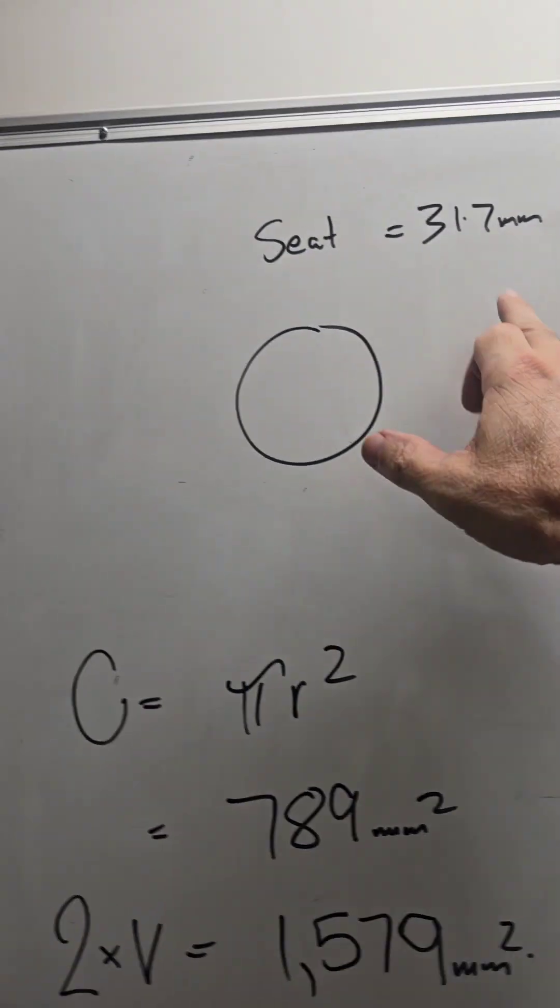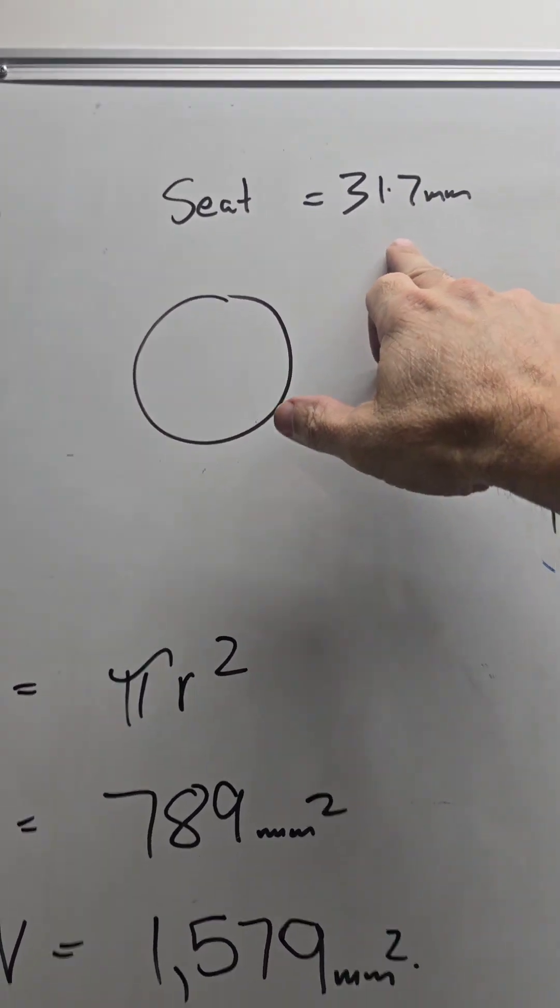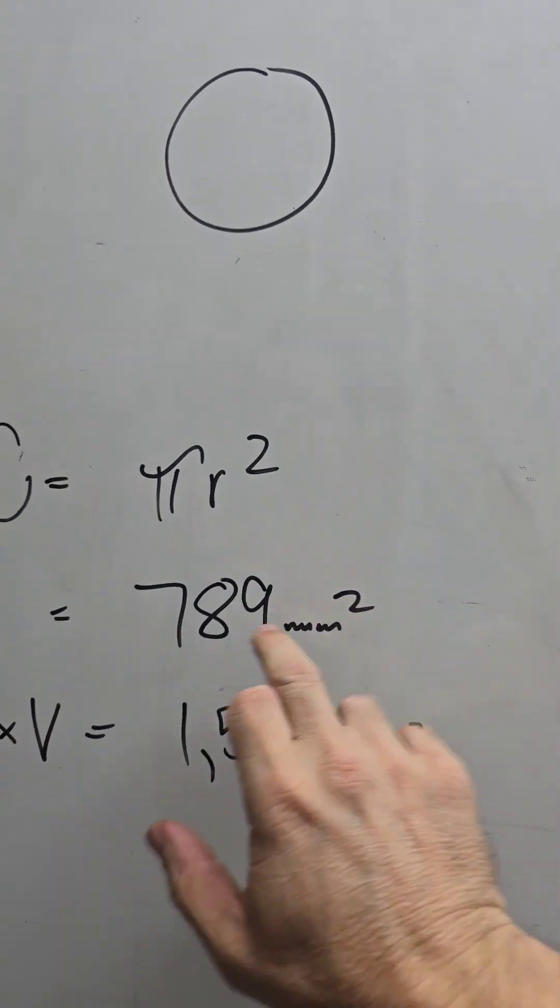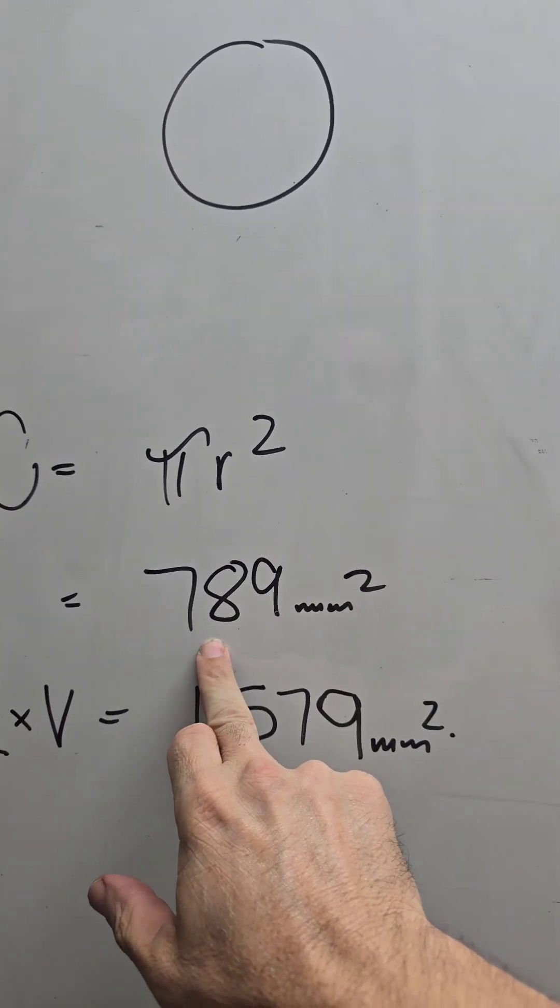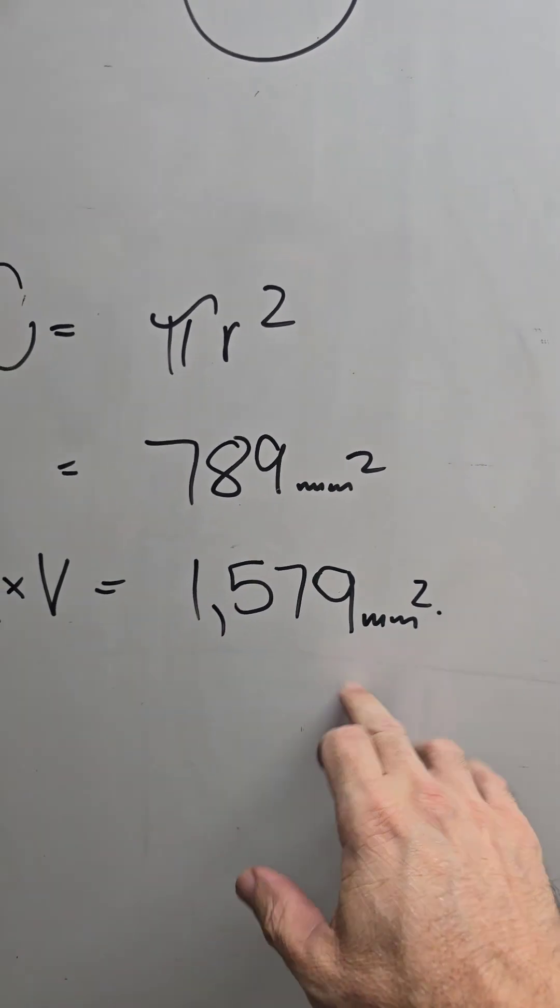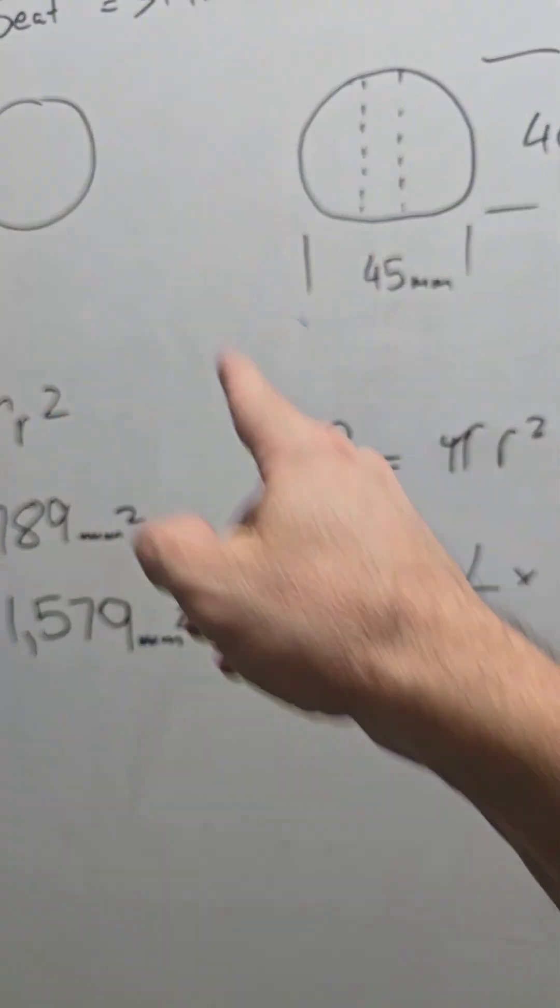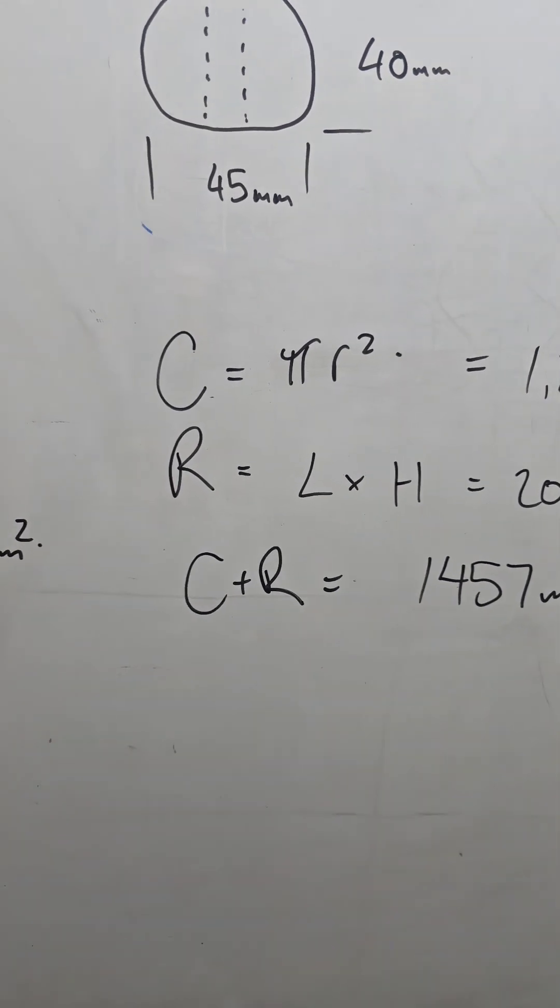Now if we look at the valve seat on the throat that it's been set up originally, we're at 31.5. Same thing. Pi R squared gives us 789 square millimeters each. Times 2 gives us 1,579. So as you can see, the valve throat is already bigger than the port window.